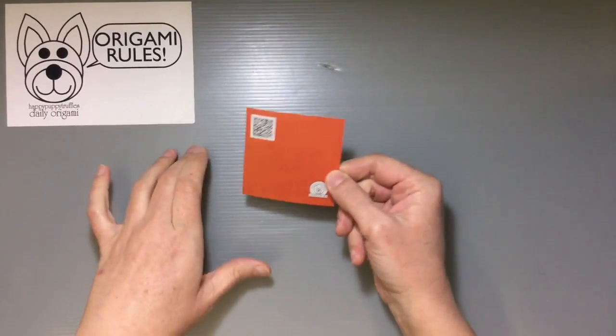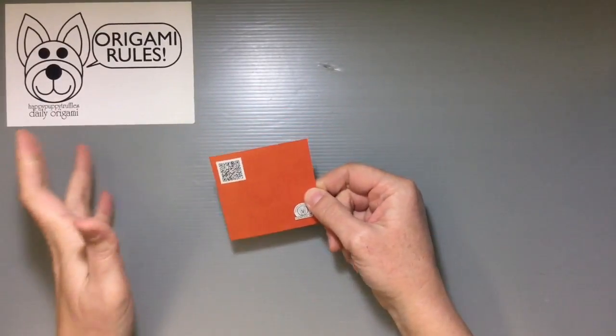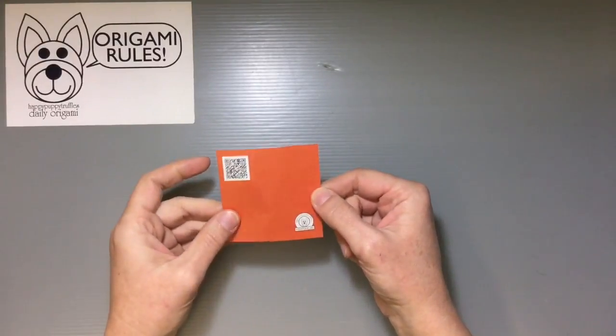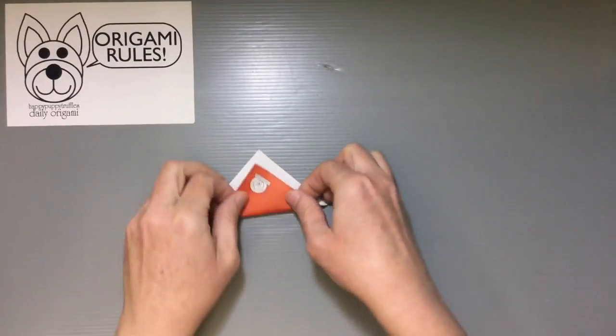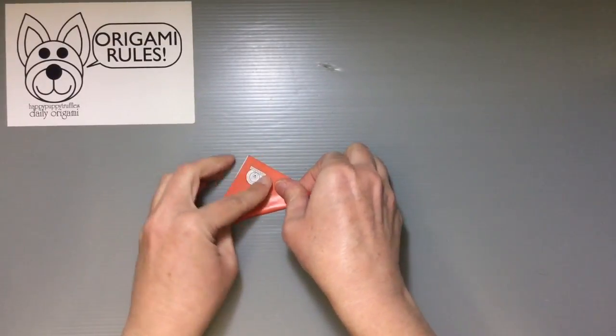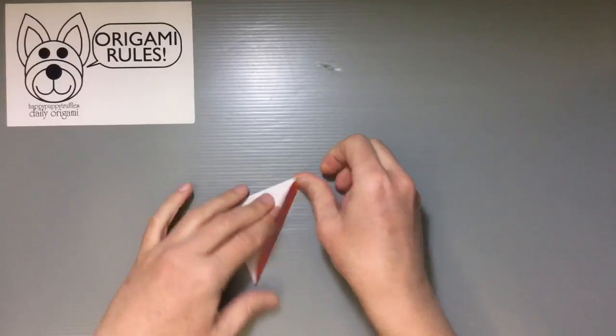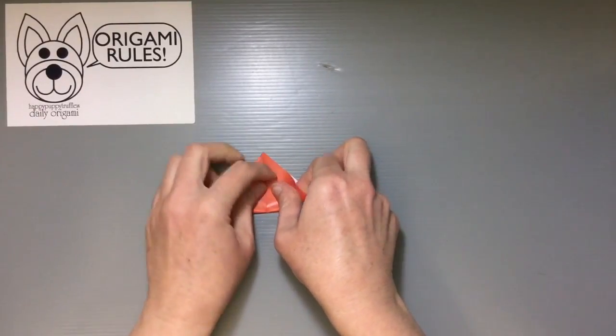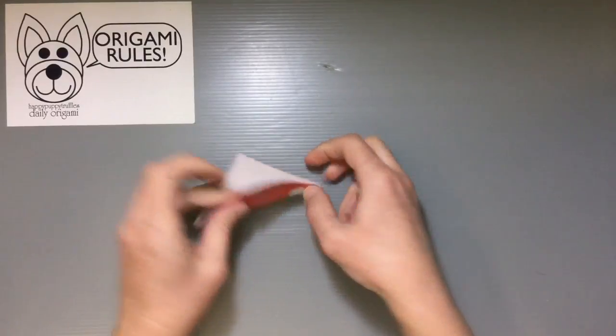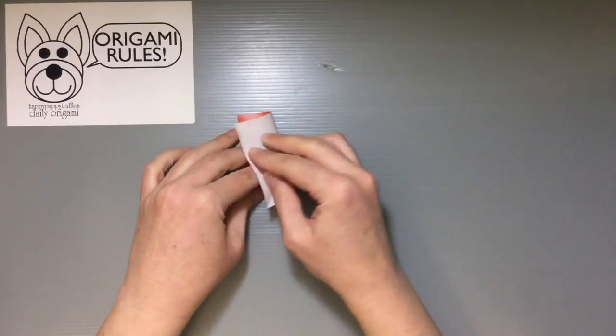And we're just going to start off with the water bomb base for all of these. So what we're going to do, whether you have QR code or not, it doesn't really matter. We're just going to start off with the color side facing down and folding it in half diagonally. And then folding it in half diagonally the other way too. And then with the color side facing up, fold it in half both ways as well.